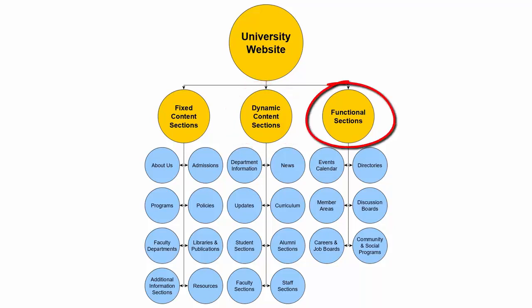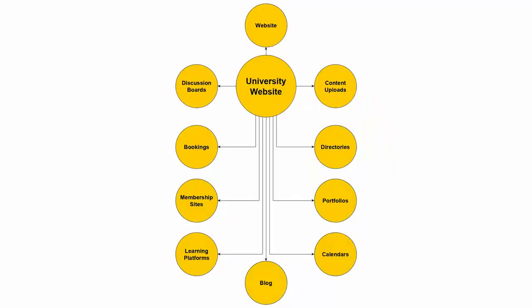Functional sections of the site can include a calendar of events, directories, membership areas for staff, faculty members, students, and alumni, discussion boards, career and job boards, and campus community and social programs. The smart way to create an effective and dynamic university website is to set up a network of modular and customizable sections.